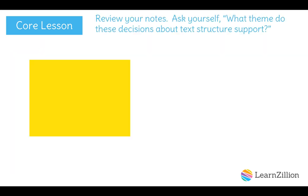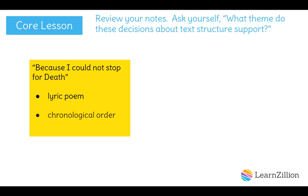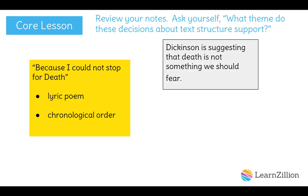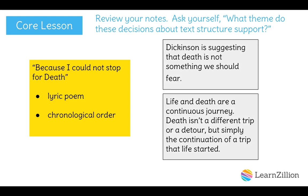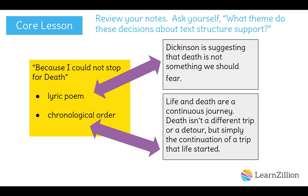Looking back over our notes: this is a lyric poem, expressing a deep emotional feeling or idea about death. It follows chronological order, starting with the first event, progressing step by step, and ending with the last event — no flashbacks, no foreshadowing. We also identified two themes: death is not something we should fear, and life and death are a continuous journey. The lyrical form supports the idea that death shouldn't be feared, as lyric poems express deep beliefs. The chronological order supports the theme that life and death are a continuous journey. Maybe the text structure actually supports both themes.